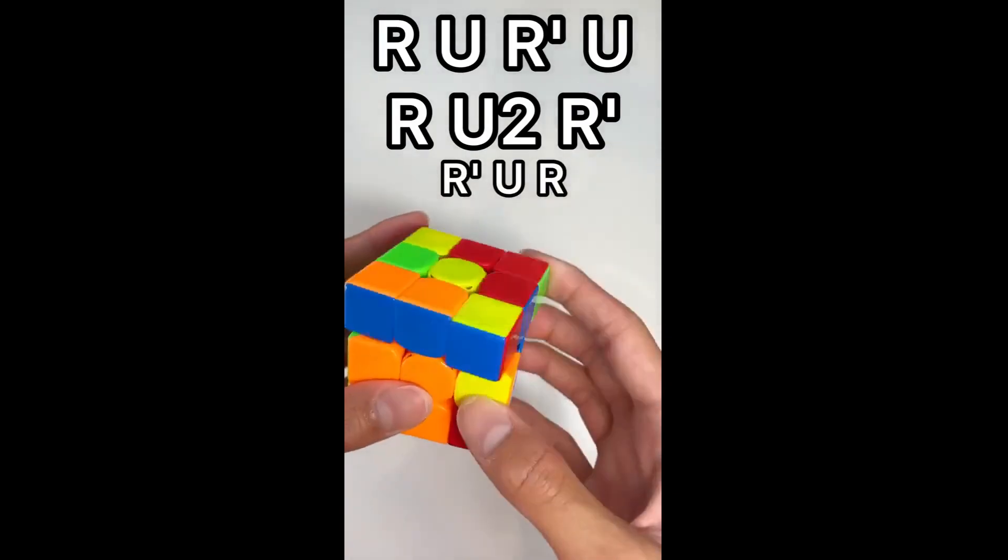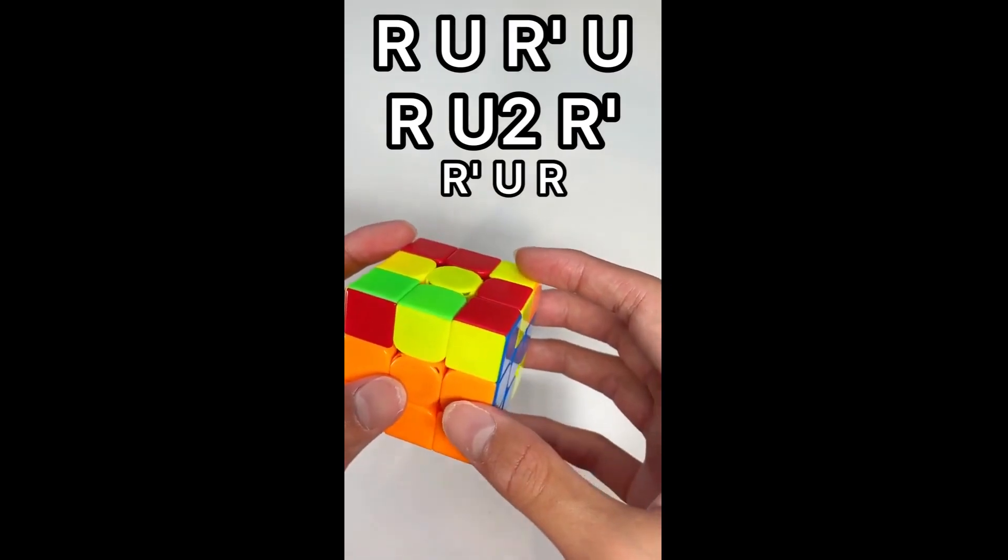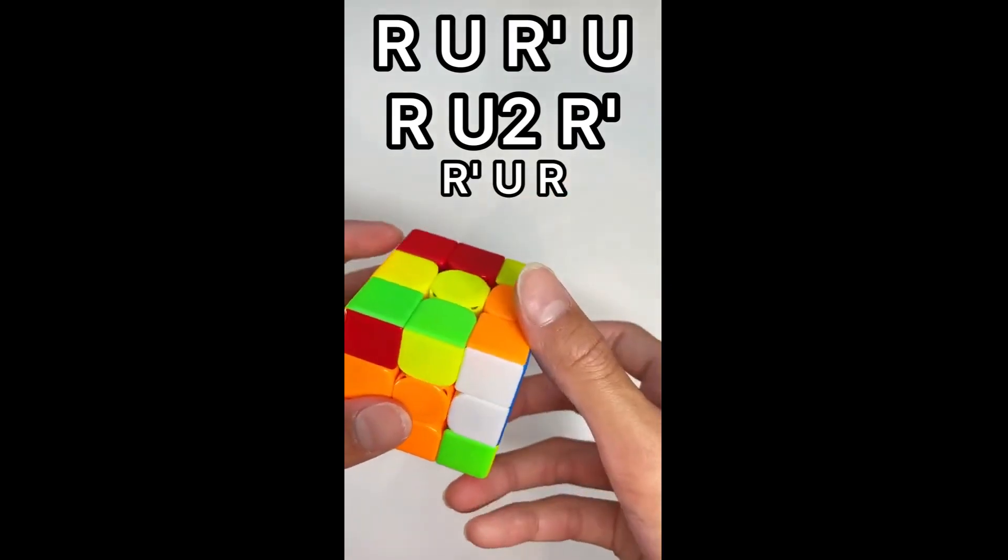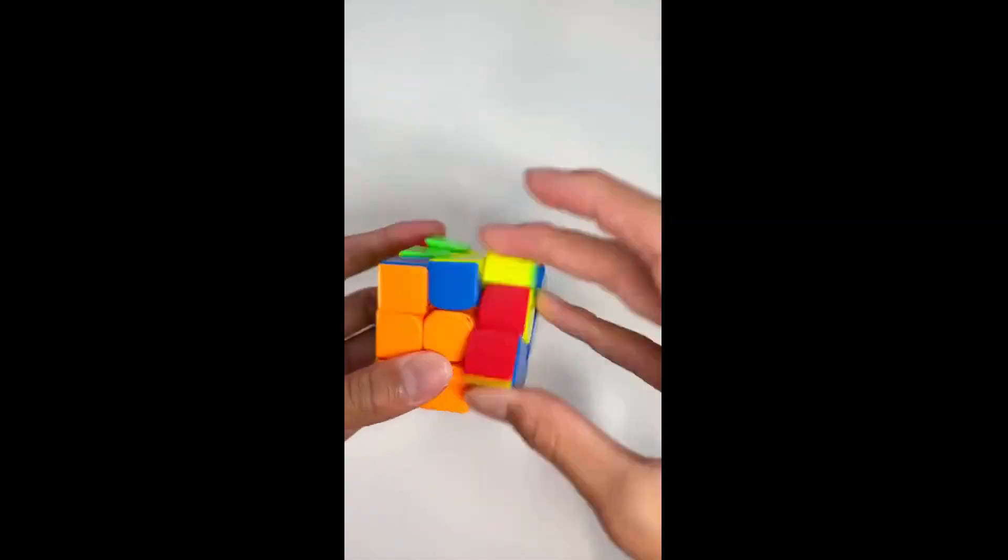But even better, as you are finishing up the SOON, instead of doing R', the first move of the insert is R', so you can just do R U R to insert this pair. And doing it fast will look something like that.